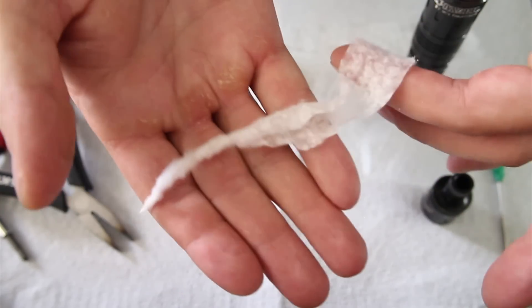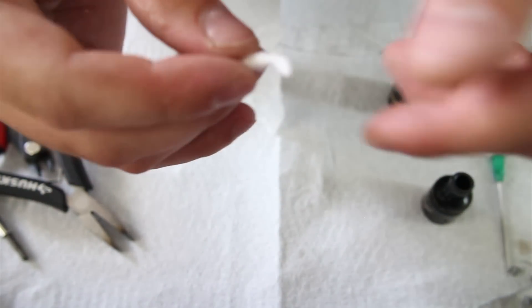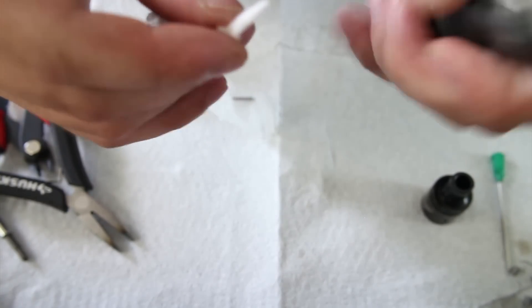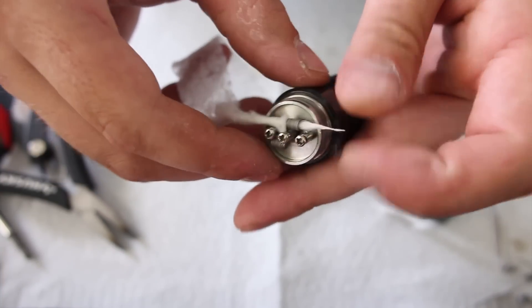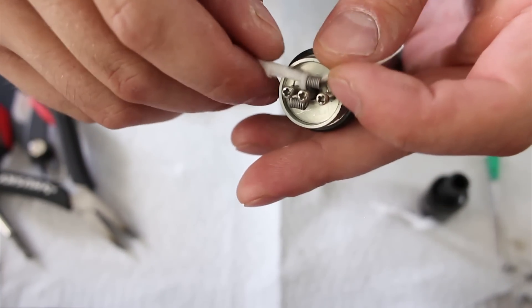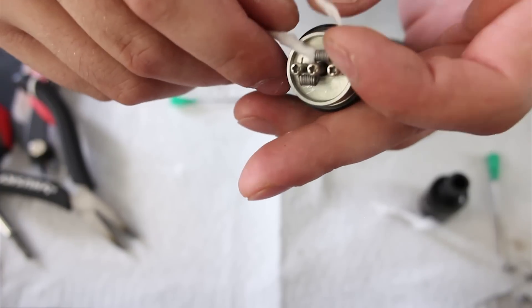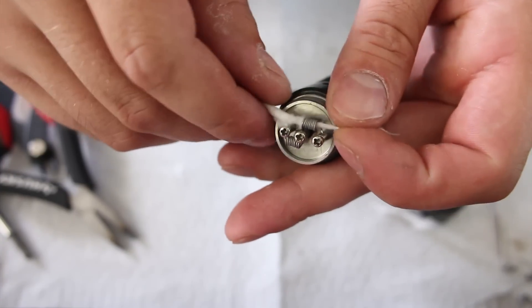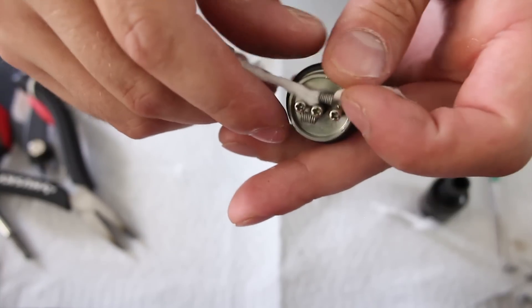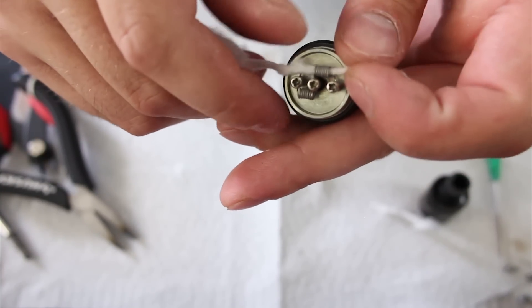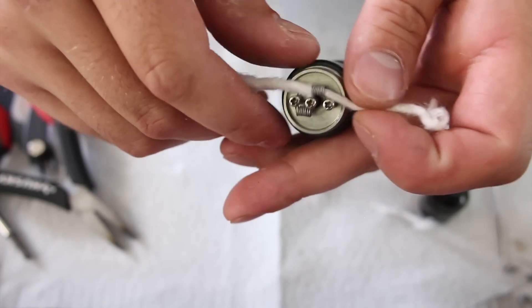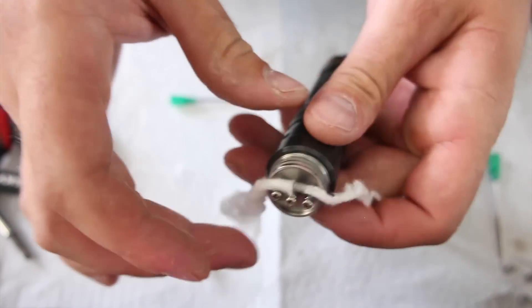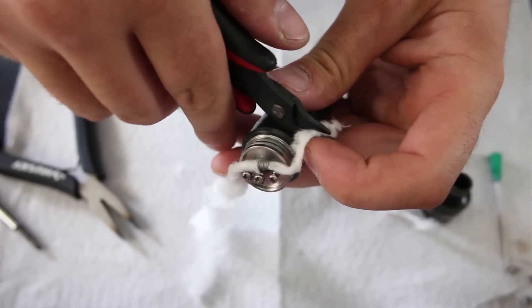So as you can see here I have my little pre-rolled wick, and now we're going to install it on our new sleeper coil.